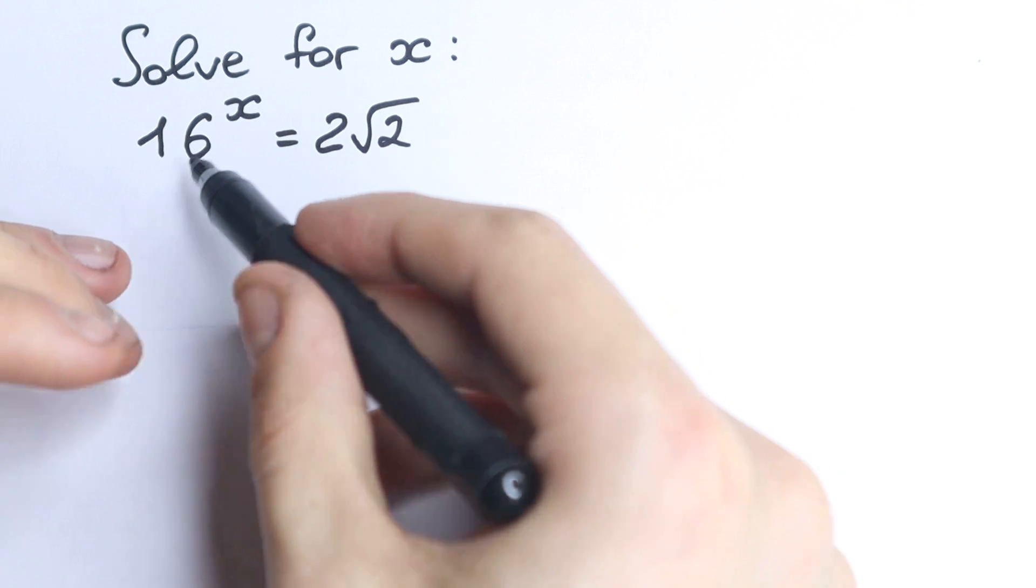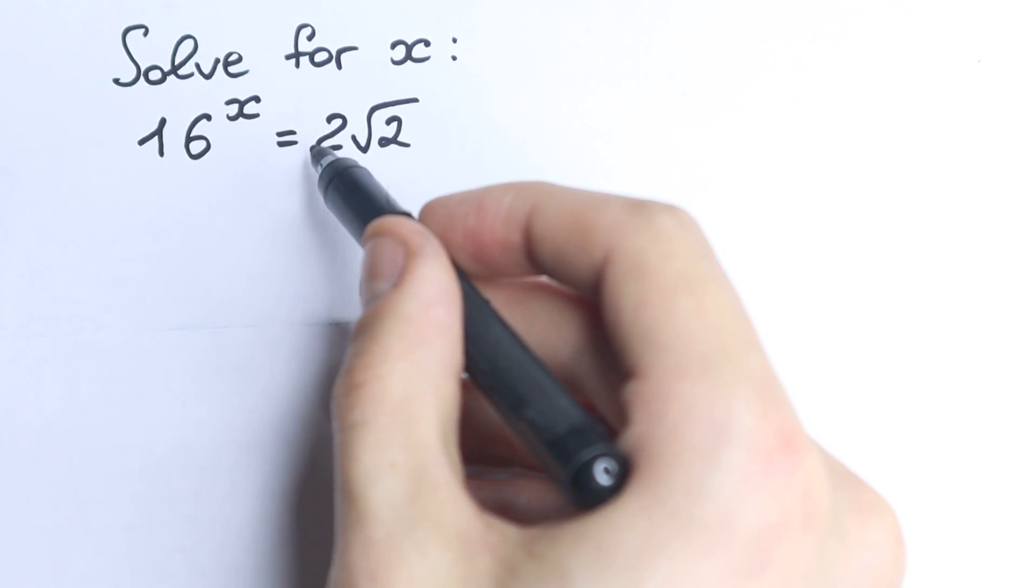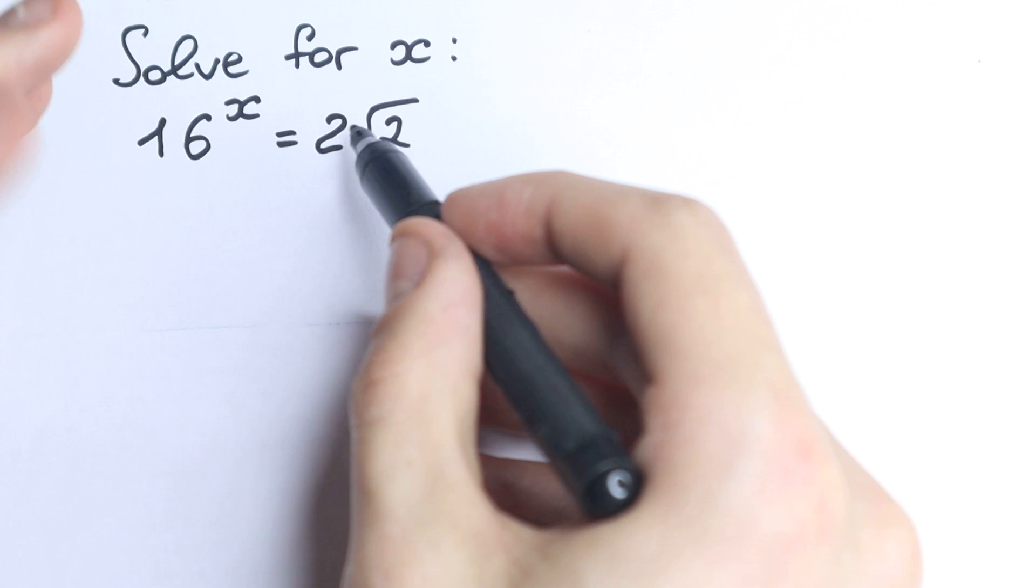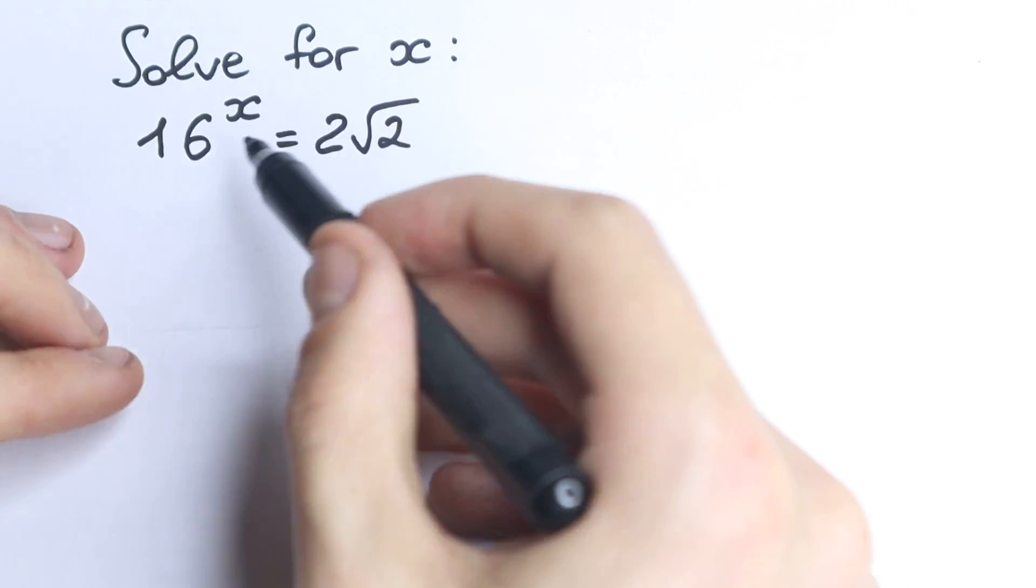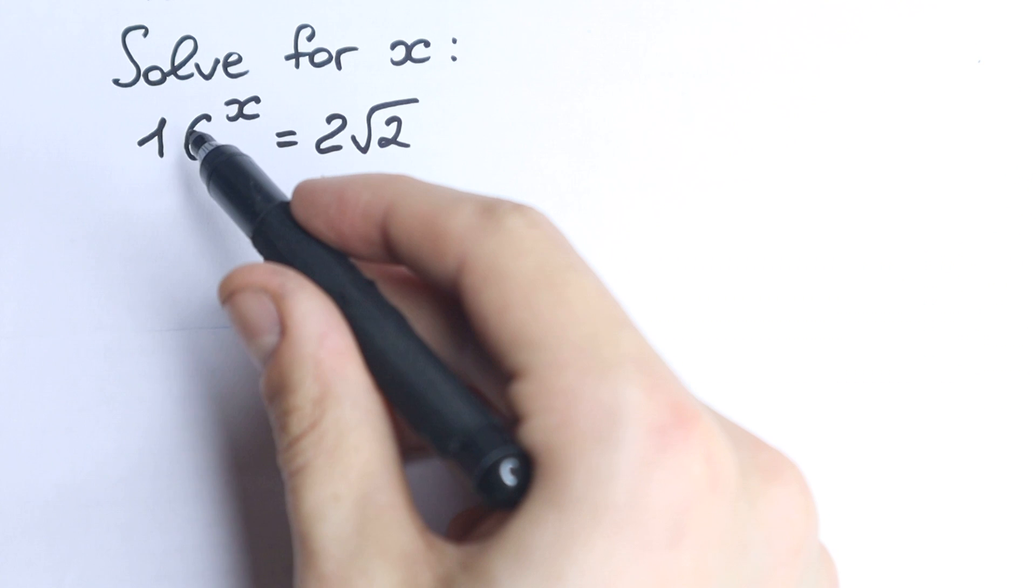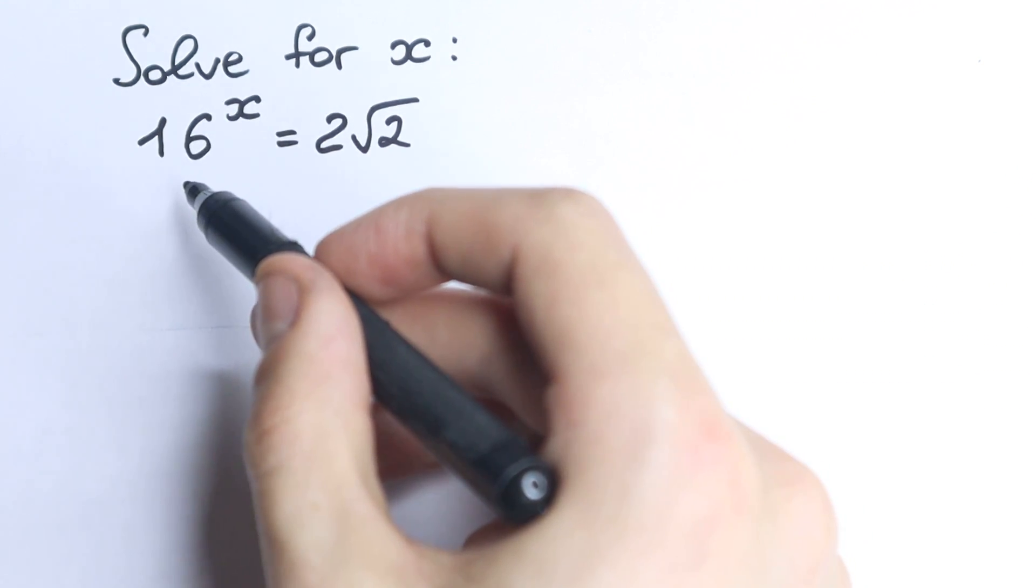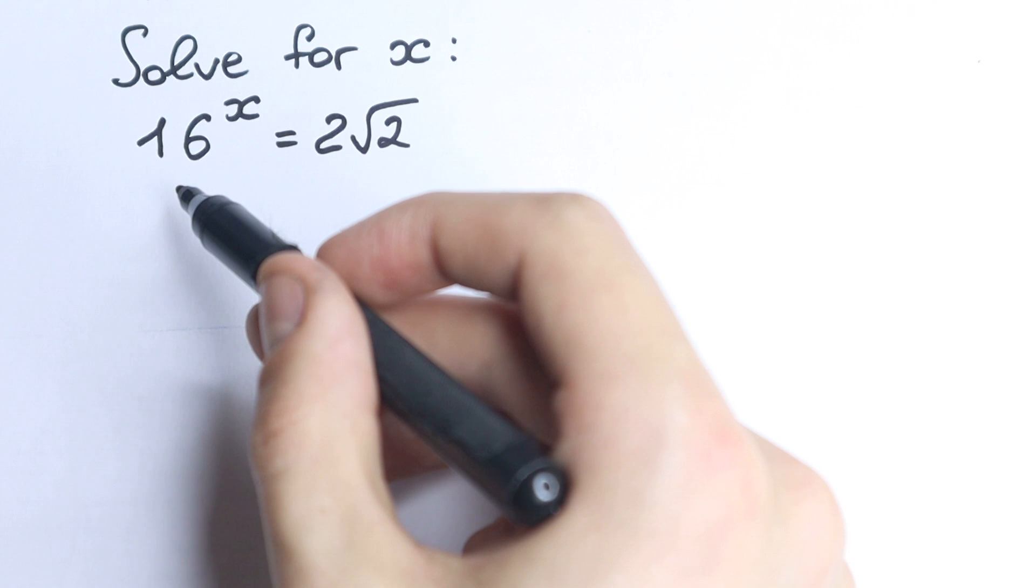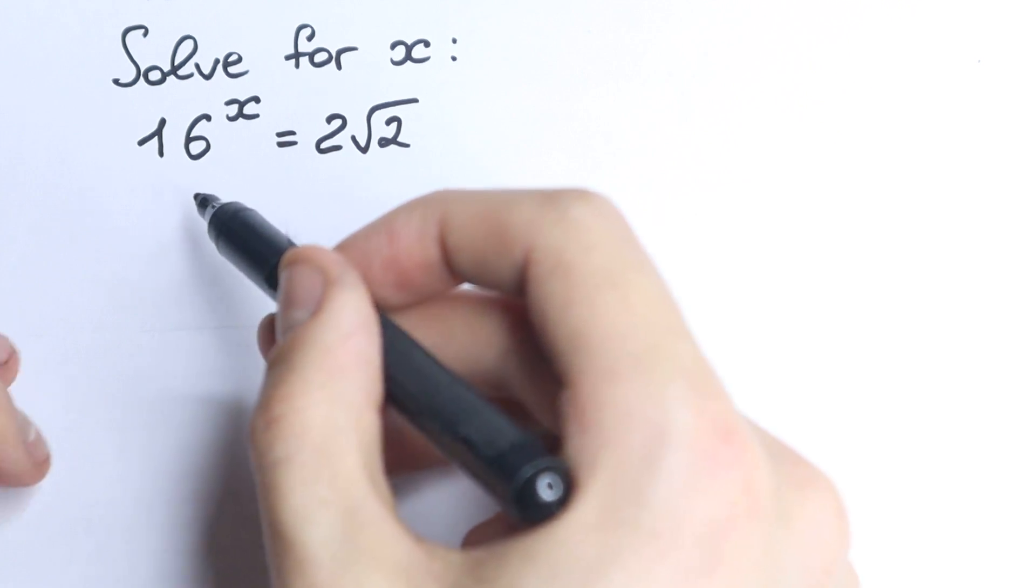First of all, it's really great to work with the same bases. So we have 2, we have square root of 2, so we can somehow create this 2. But this 16, how can we express this 16 with the base of 2? Of course we know that 2 cubed equal to 8, 2 squared equal to 4, and 2 to the fourth power equal to 16.